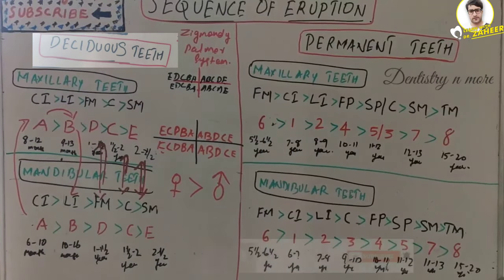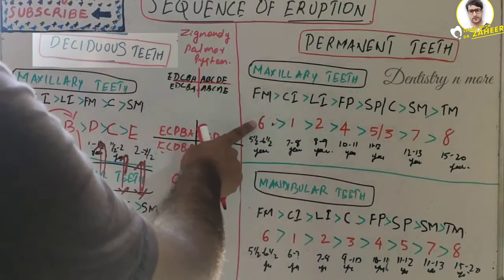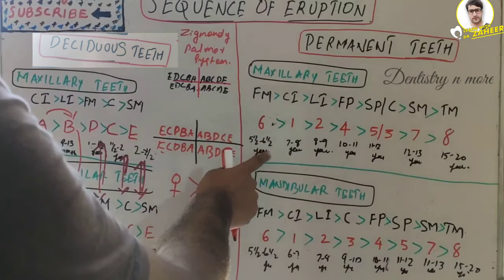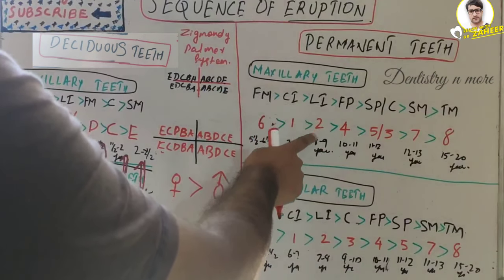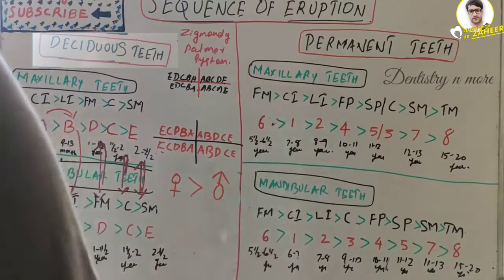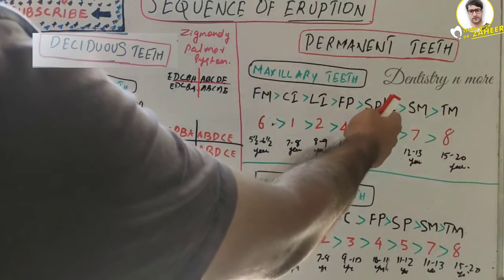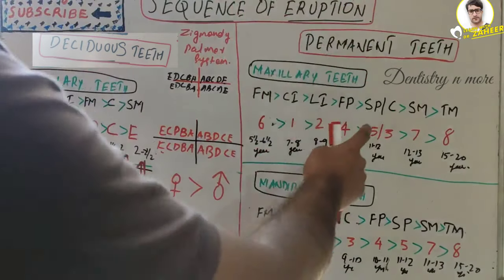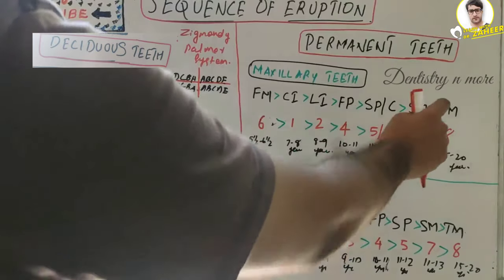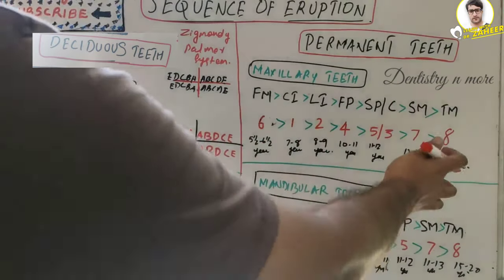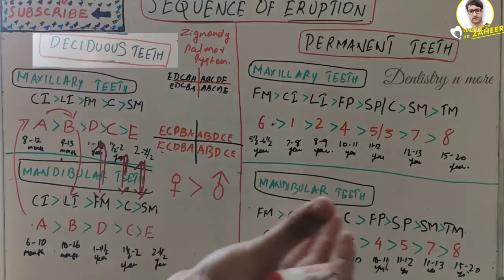Now for permanent teeth, starting with the maxilla: the first tooth to erupt is the first permanent molar at around 5½ to 6½ years. Then the central incisor at 7 to 8 years, lateral incisor at 8 to 9 years, first premolar at 10 to 11 years, then the second premolar and canine at around 11 to 12 years, second molar at 12 to 13 years, and the third molar has a wide variation from 14 to 20 or 21 years — sometimes it doesn't erupt at all due to ankylosis or impaction.